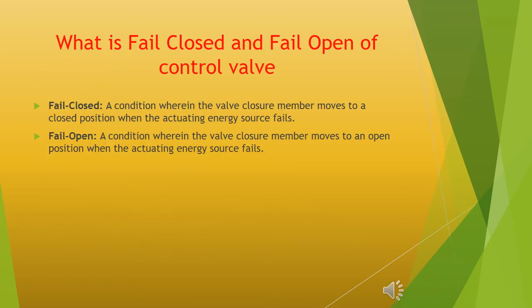What is fail closed and fail open of a control valve? Fail closed: a condition wherein the valve closure member moves to a closed position when the actuating energy source fails. Fail open: a condition wherein the valve closure member moves to an open position when the actuating energy source fails.